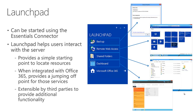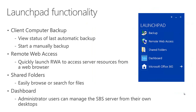The Launchpad can also be extended in various ways by third parties. Here in the screenshot you can see that I have installed the optional Office 365 integration, so the Launchpad can become a jumping-off point for that as well. Other third parties can extend the Launchpad with different features and functionality too. Basically, the Launchpad has four main areas — one is to look at the status of the client computer backup. When you connect your computer into the Essentials environment, by default it will automatically back up that computer to the server overnight or during whatever window of time you've defined.